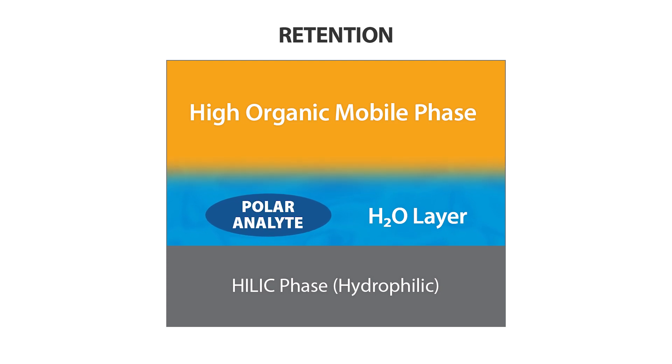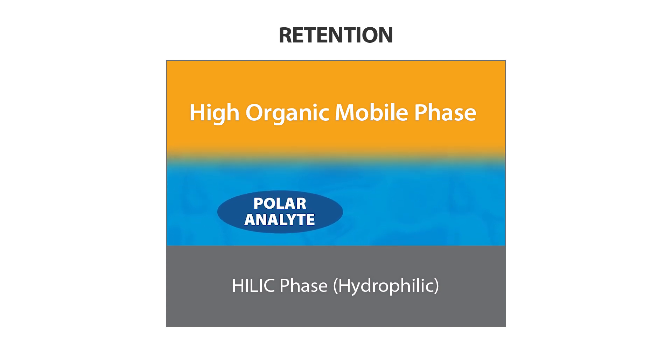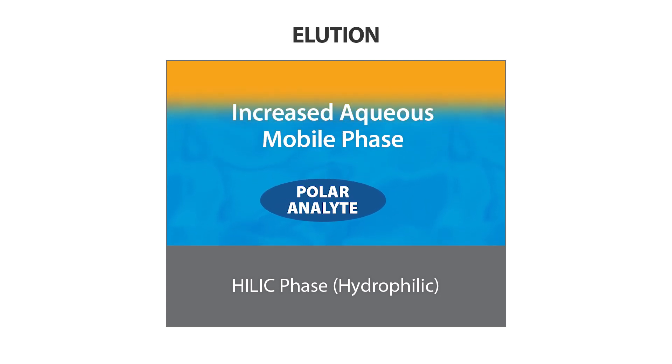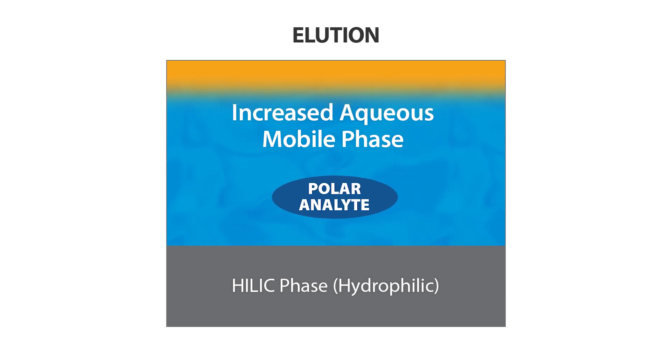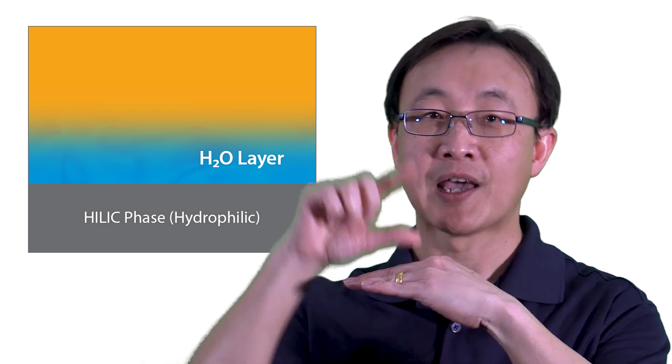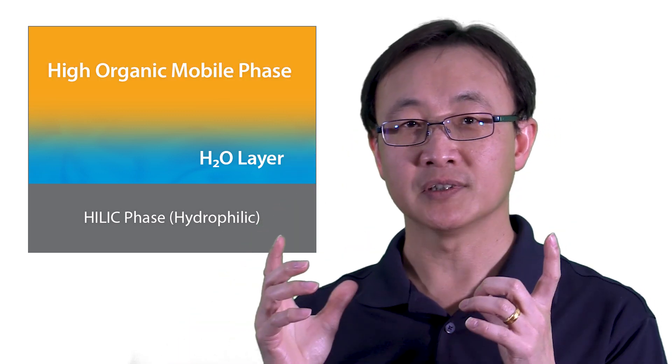The mobile phases are similar to those used in reverse phase LC. However, in HILIC separation, the initial condition is under a highly organic mobile phase to generate a water-rich layer on the surface of the polar stationary phase. Because polar analytes are soluble in the water layer, they can interact with the polar stationary phase and be retained in multiple ways, including hydrogen bonding, dipole-dipole interaction, and ion exchange. With differential distribution between the stationary phase, water layer, and mobile phase, the mixture of polar compounds can be selectively eluted from the HILIC column.